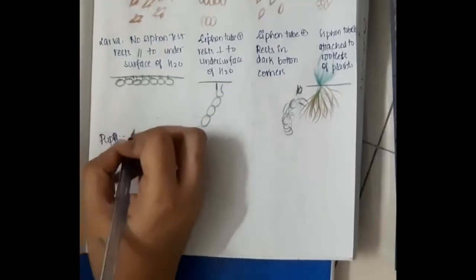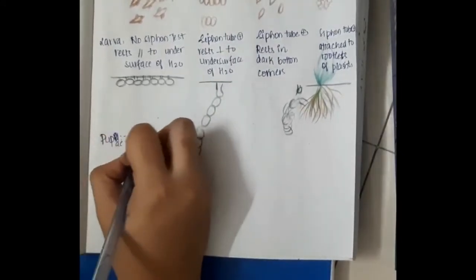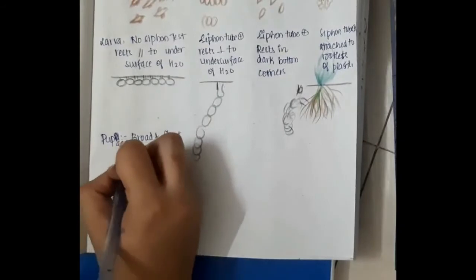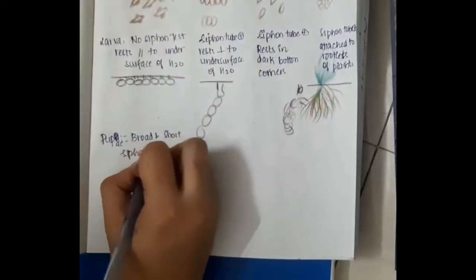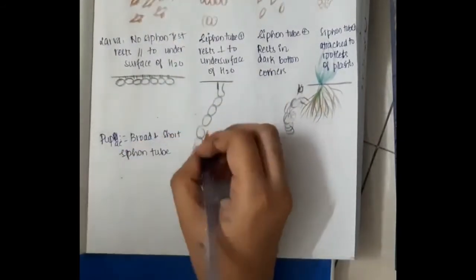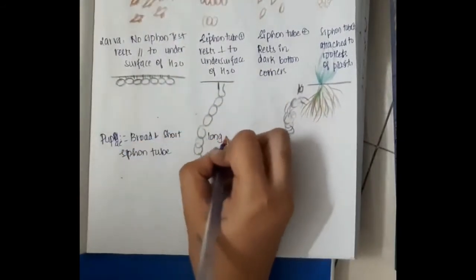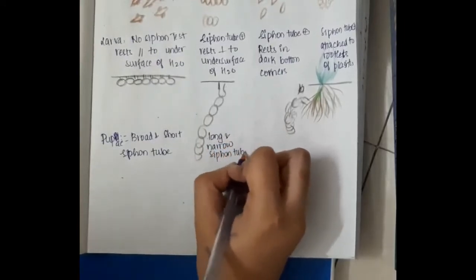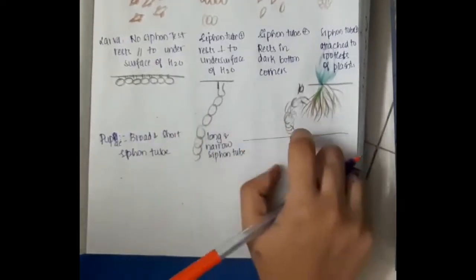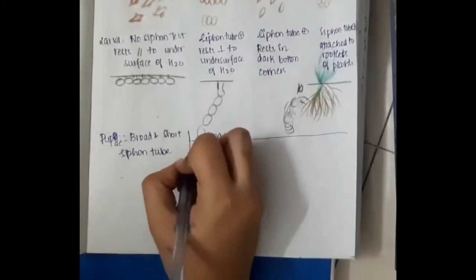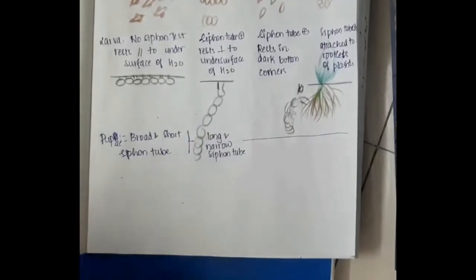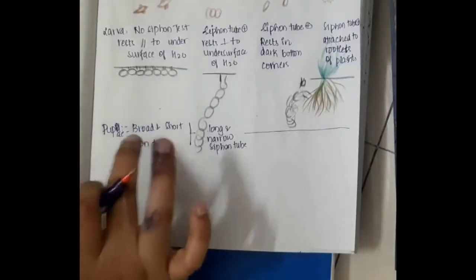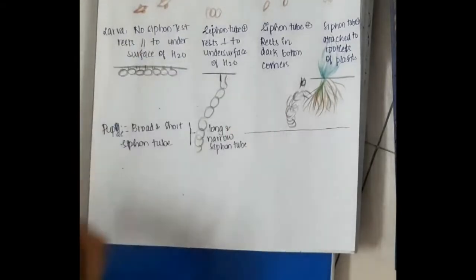The pupa of Anopheles are broad and short with a broad siphon tube. Whereas in Culex, the pupae have a long and narrow siphon tube. Long and narrow siphon tubes are also present for Aedes and Mansonia mosquito pupae.